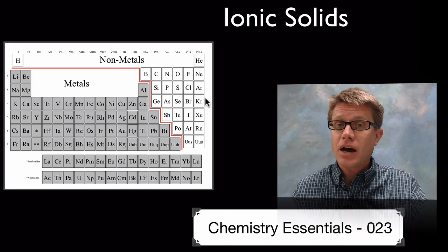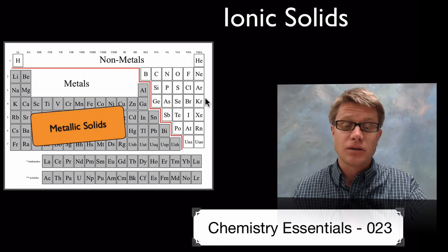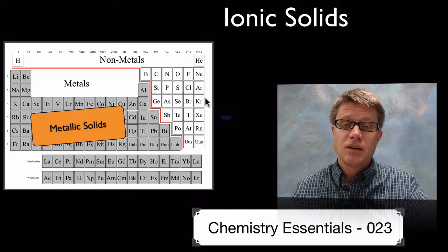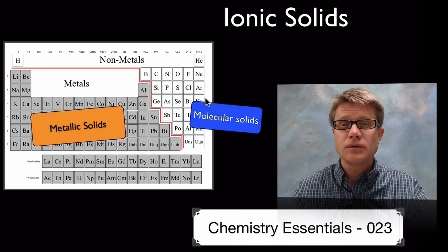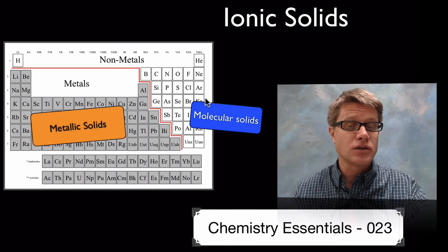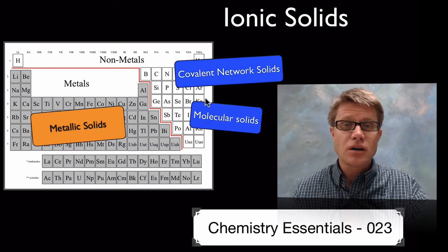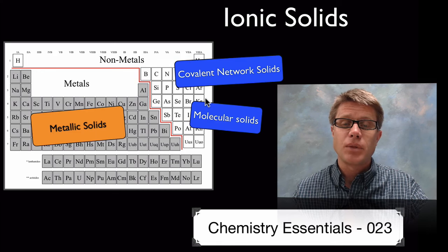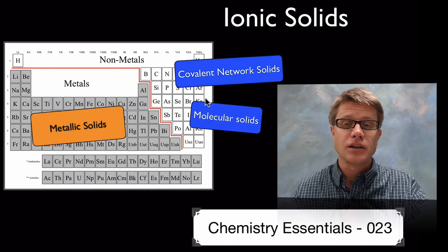If that solid is made up of just atoms from the metals we call it a metallic solid. If it's only nonmetals but they're relatively small we call those molecular solids.